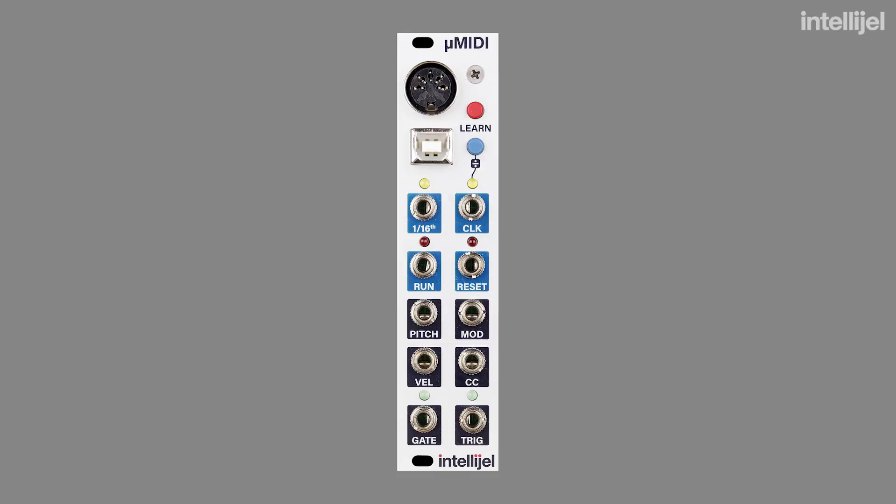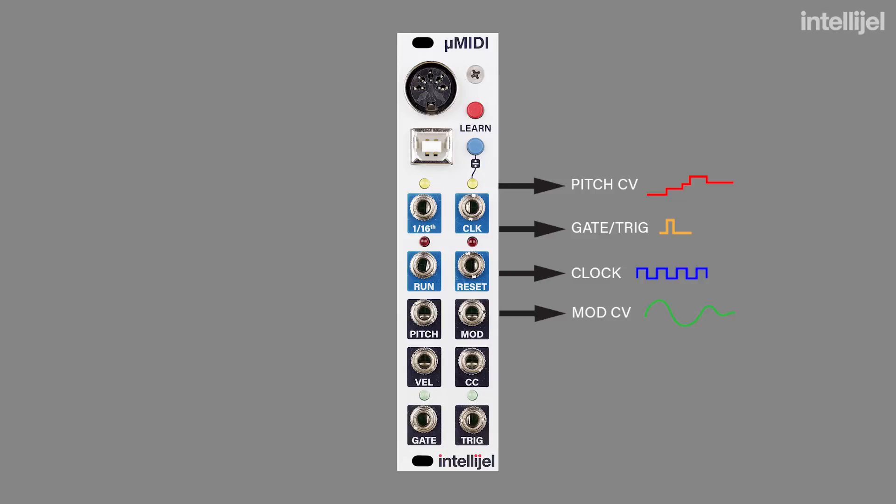Furthermore, it breaks those independent elements into separate control voltage outputs. There are four main types of CV output used by the Micro MIDI: pitch, gate or trigger, clock, and modulation.